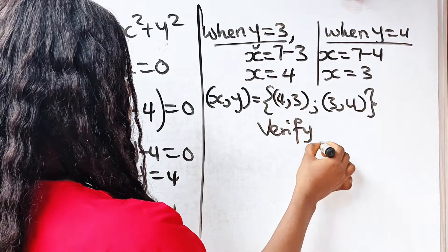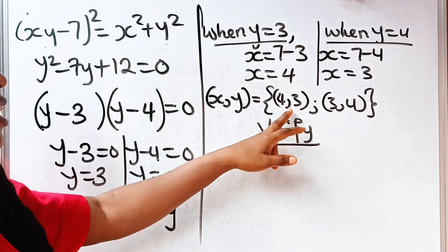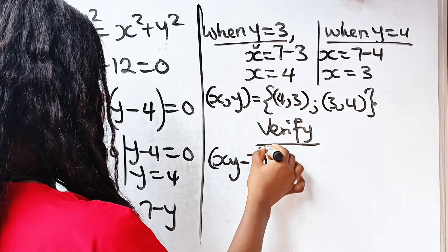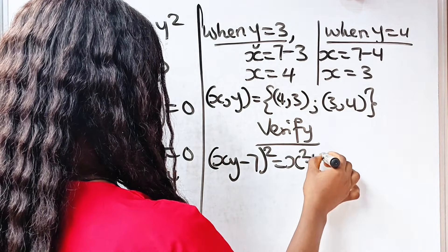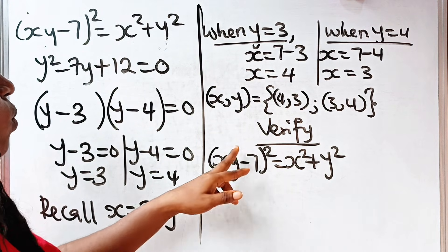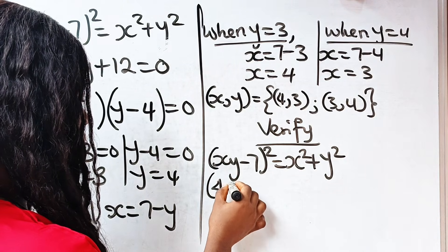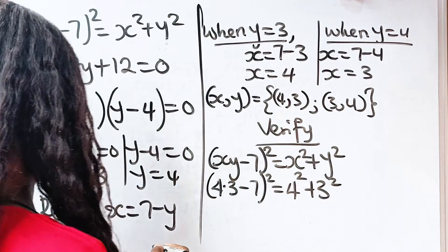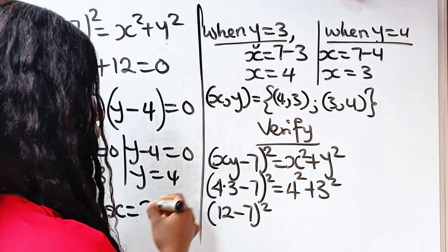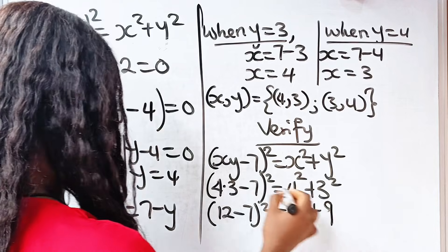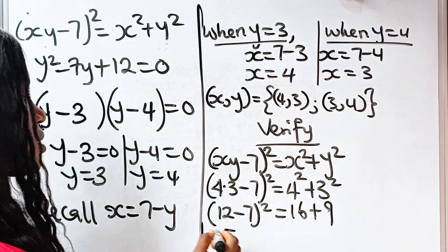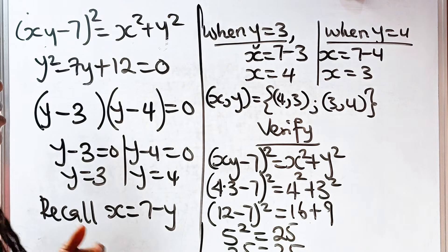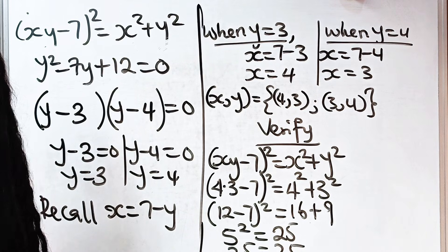Now let's verify using the first set of answers. We have (xy - 7)² = x² + y². Substituting x = 4, y = 3: (4×3 - 7)² = 4² + 3². That gives (12 - 7)² = 16 + 9, so 5² = 25, and 25 = 25. This proves that the answer we got is correct. Thank you so much for watching. See you in my next video.